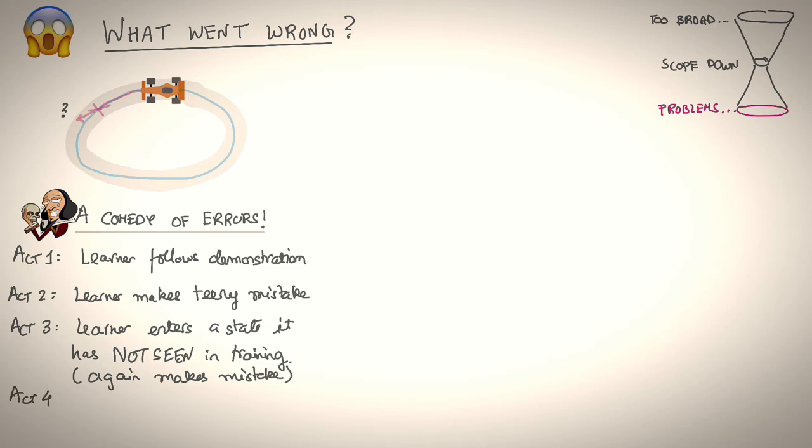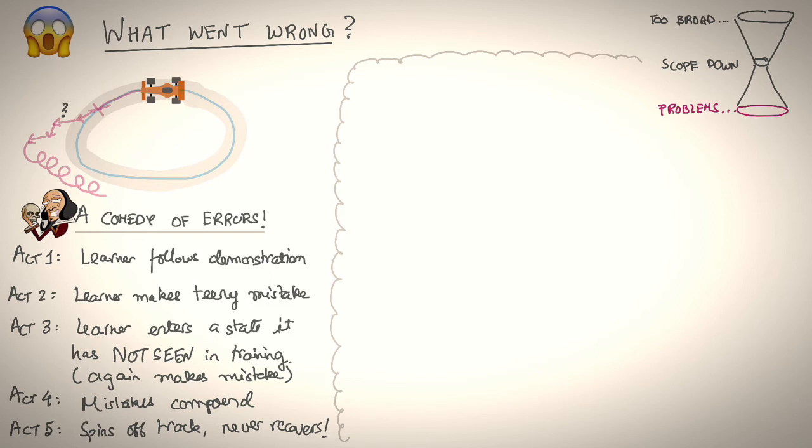Because it hasn't seen at training time, it doesn't really know what to do, and so again makes a mistake. Act four, things start to really build up. Mistakes compound. And finally, act five, at this point, the learner is so far off the expert trajectory that it spins off the track and never recovers because it's never really seen how to recover. And while this might seem comical, this is an old problem that has been with us since the birth of imitation learning.